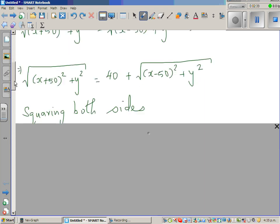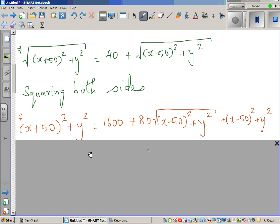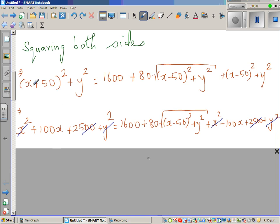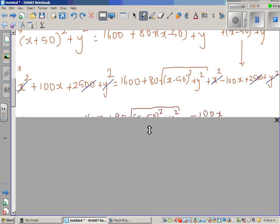When you square both sides, the square root will be removed and using perfect square is 1600 plus 80 times this whole thing plus the square of this. Expanding the left hand side is x² + 100x + 2500 + y² equals this. Plus x² from both sides, 2500 from both sides, y² gets cancelled.